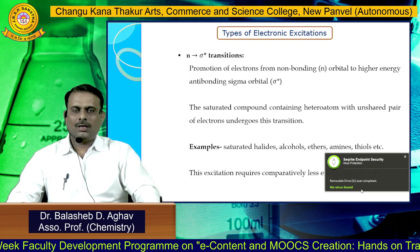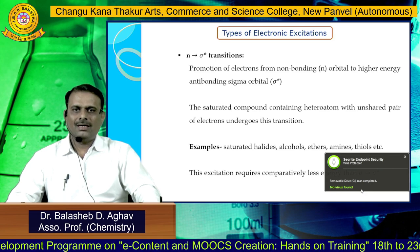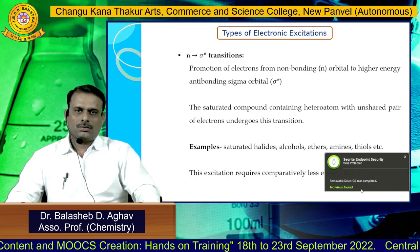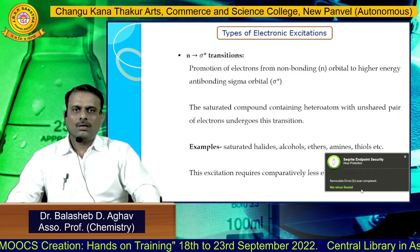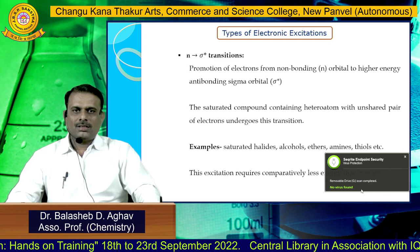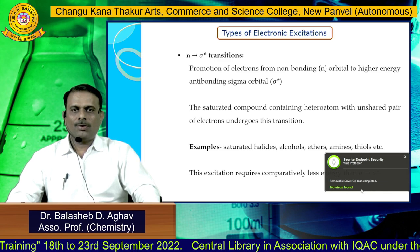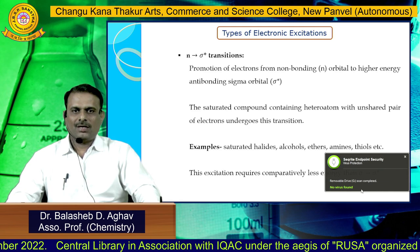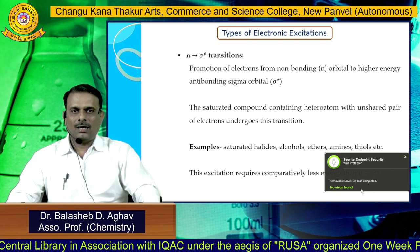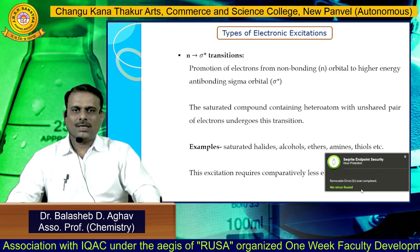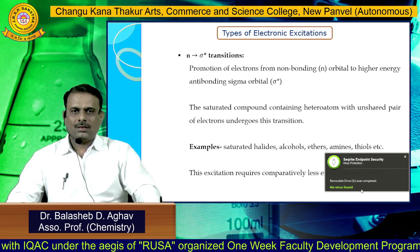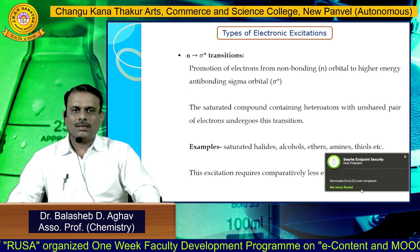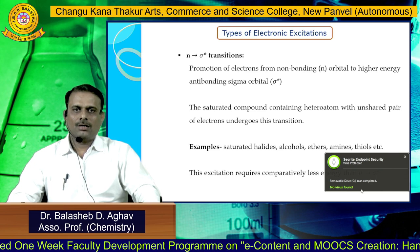The second type of electronic transition is n to sigma star transition — the excitation of a non-bonding electron to the sigma star anti-bonding molecular orbital. This type of excitation is shown by saturated compounds containing a heteroatom which has an unshared pair of electrons. Examples include saturated alcohols, halides, ethers, amines, and thiols. This excitation requires comparatively less energy than sigma to sigma star transition.